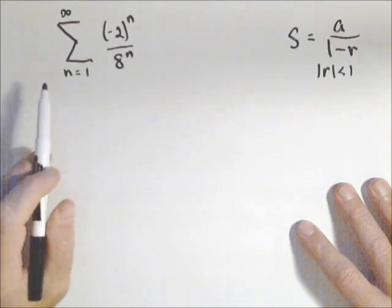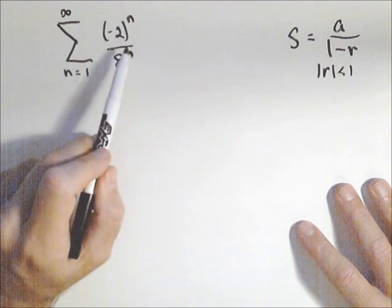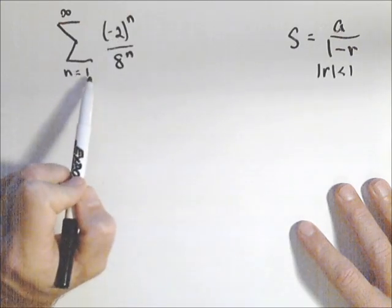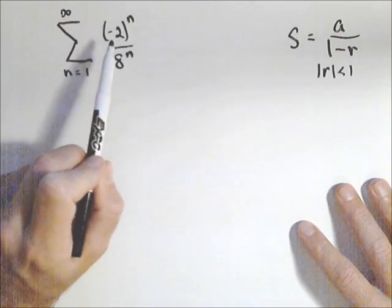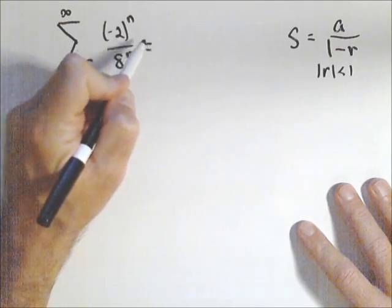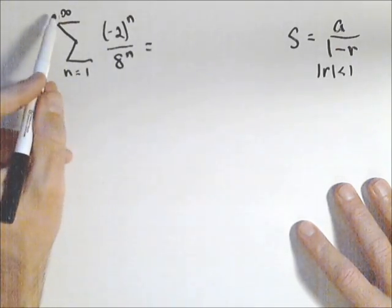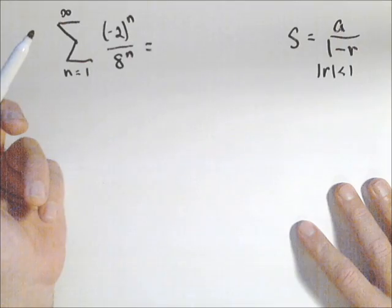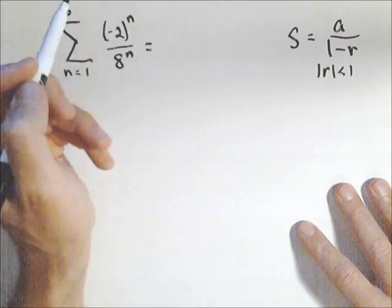So that's what we need to determine. So my first one here, I have what's called an alternating series, because every time n goes up by one, it's gonna switch back and forth between positive and negative. Now that doesn't keep us from being able to find the sum. It is infinite, as long as our common ratio is less than one, the absolute value of it.